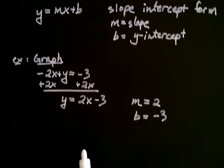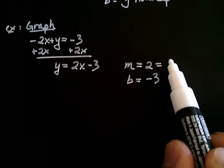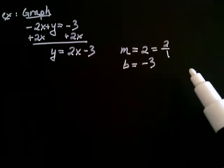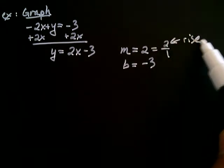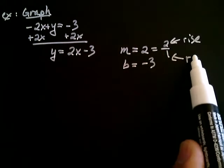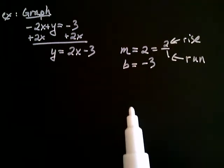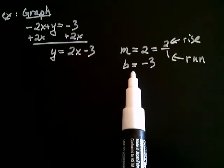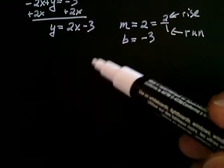We often write the slope m as a fraction, so I like to write this as 2 over 1. The 2 is the rise and the 1 is what's called the run. What we do is start with the point we have — the y-intercept — because the y-intercept is actually a point on the line.